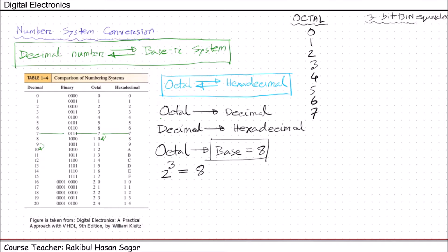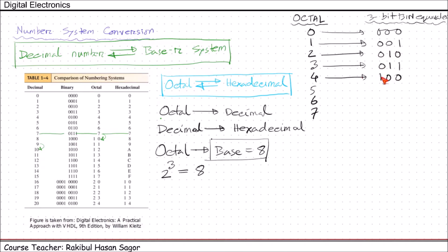A binary number can be converted into an equivalent octal number by splitting the integer and fractional parts into groups of 3 bits, starting from the binary point on both sides. Zeros can be added to complete the outside groups if needed. For example, to find the binary equivalent of octal 374.26: each digit is replaced by its 3-bit binary equivalent. For 4: 100, for 7: 111, for 3: 011. Then point, for 2: 010, for 6: 110. This is the binary equivalent of octal 374.26.